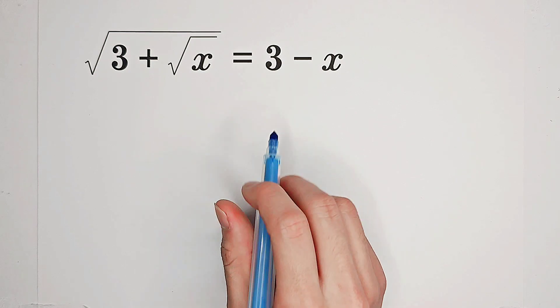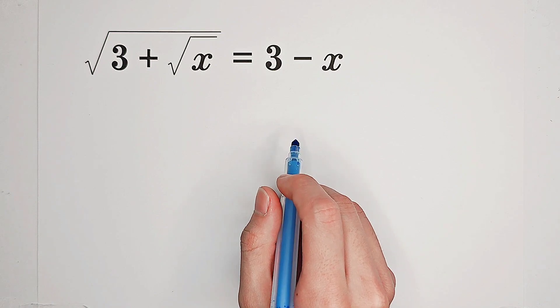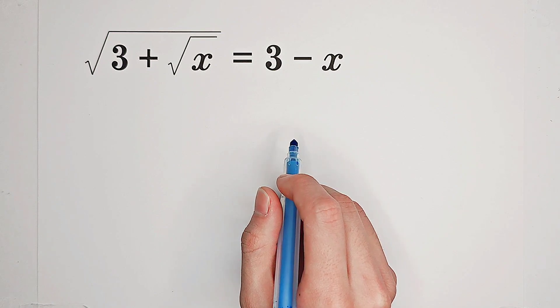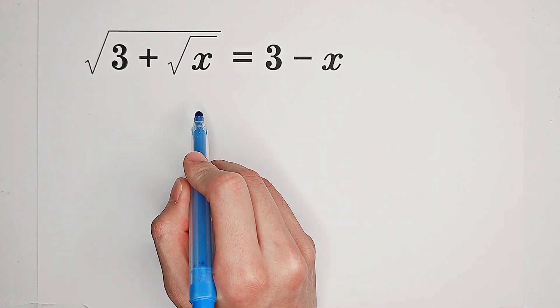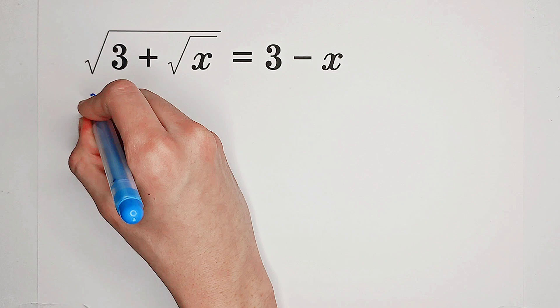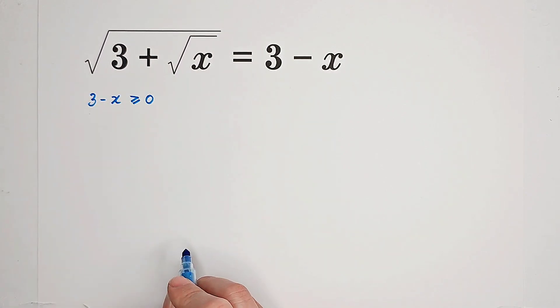Firstly, notice that a square root cannot be negative. So what does it mean? The left hand side is a square root. So 3 minus x should be positive or equal to 0, not negative.